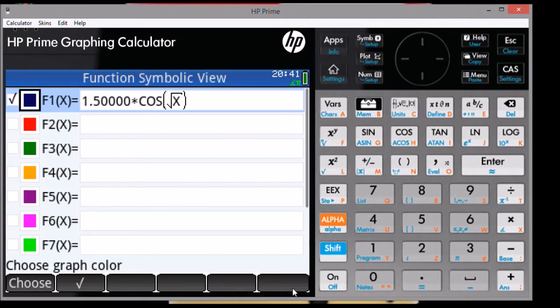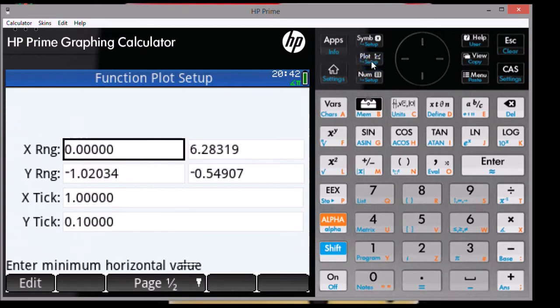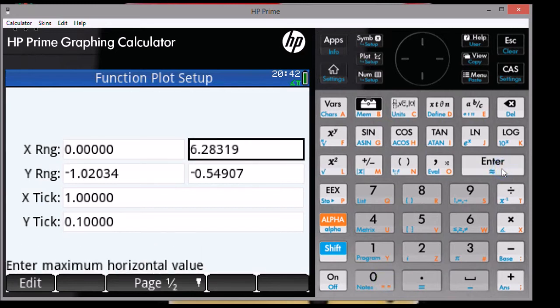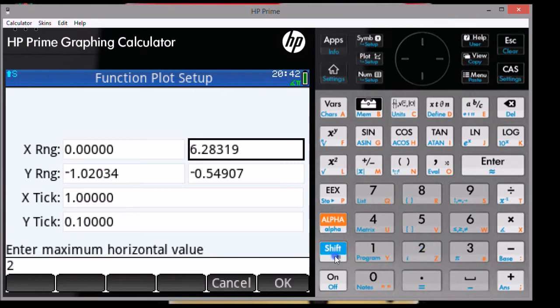The next thing you want to do is to set up your plot screen. Press shift plot and you're going to be taken to the plot setup screen. I definitely recommend the x range go from the lower limit to the upper limit.